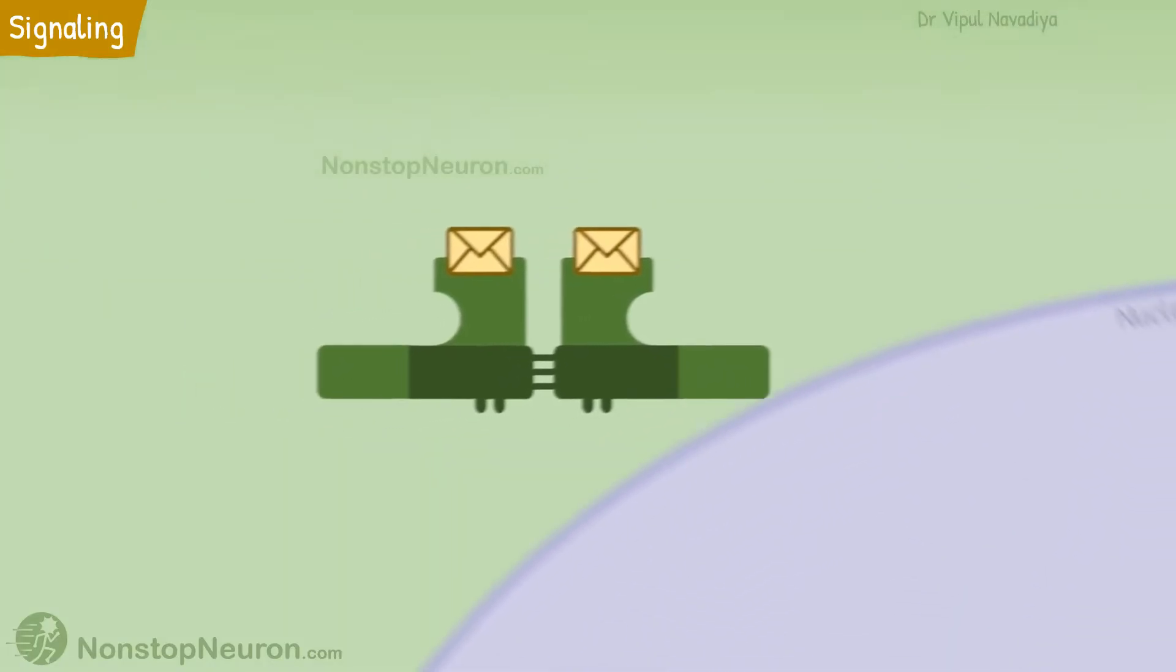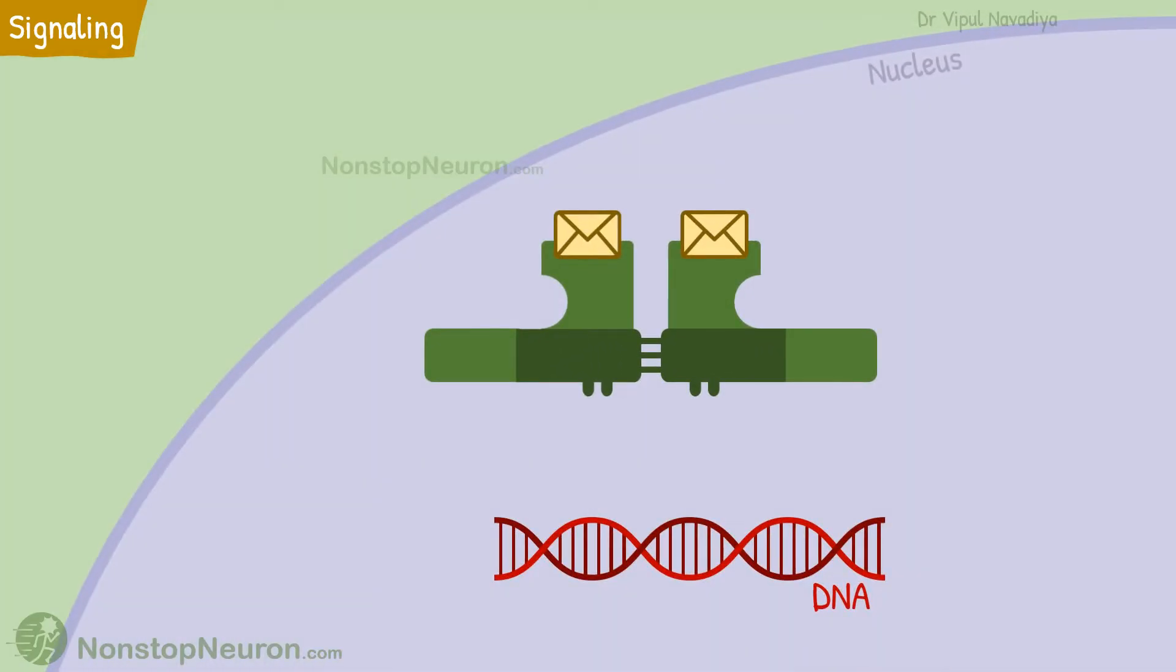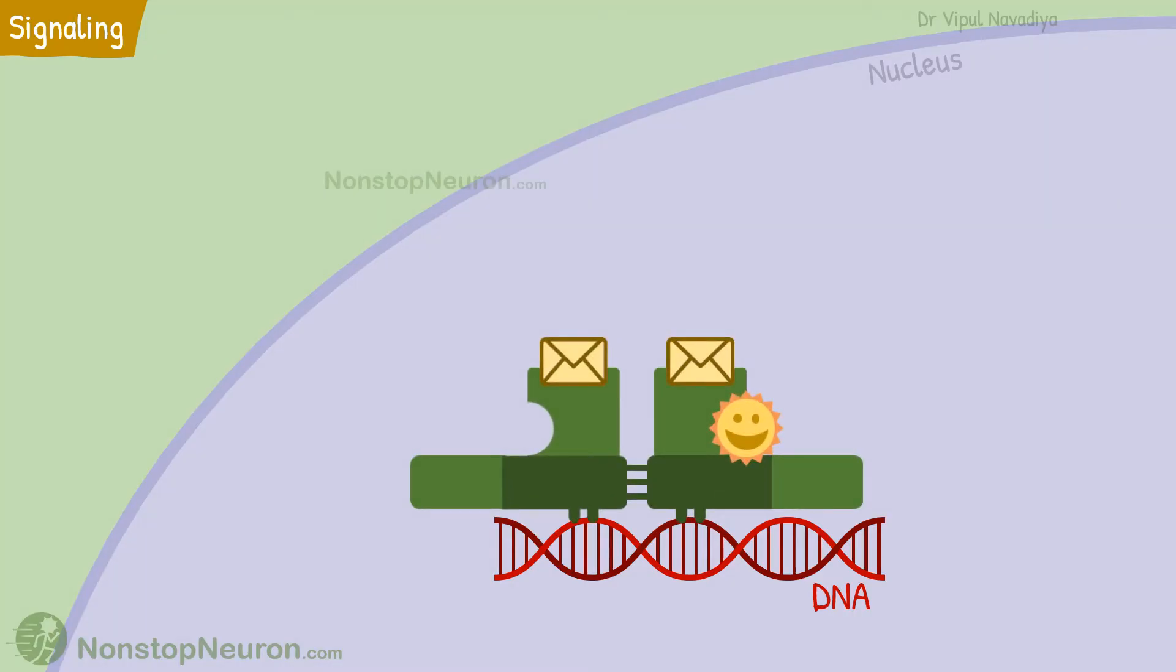The pair then enters the nucleus. It also binds with a co-regulator. The co-regulator can be a co-activator or a co-repressor. Finally, the complex attaches to the specific region in the gene.